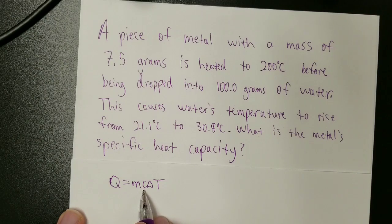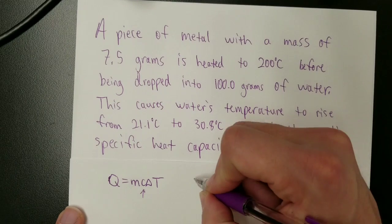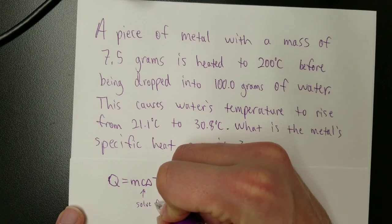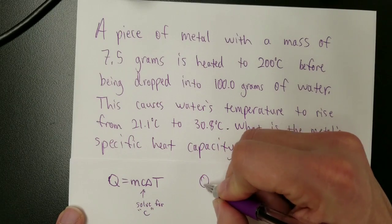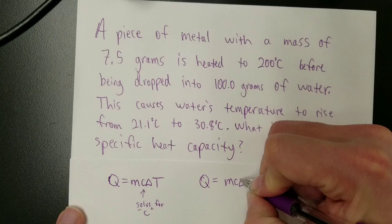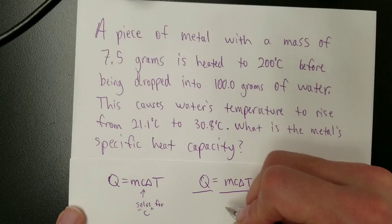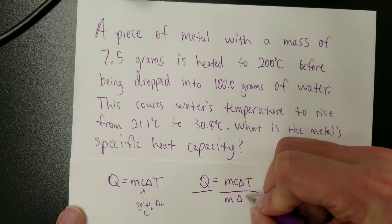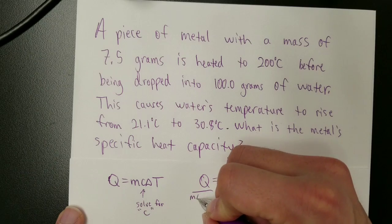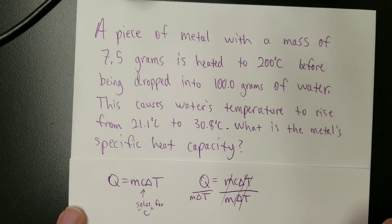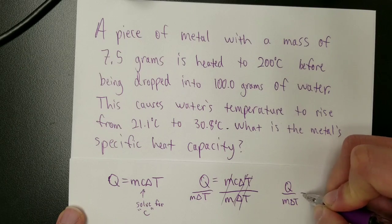So we're solving for C. In order to do that, I need to rearrange the equation to get C. So if I'm going to solve for C, then what I'm going to do is take the original equation, Q equals mcΔT, and get C by itself by dividing away all the stuff that isn't C. So divide by mΔT. That gives Q over mΔT equals C.